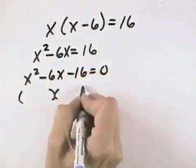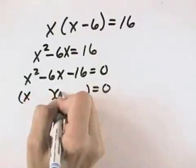Now I'm ready to factor this so that I can set each factor equal to 0. I know the first terms will be X.